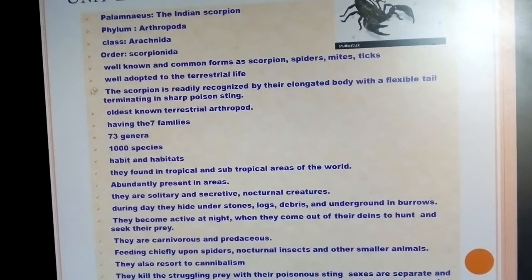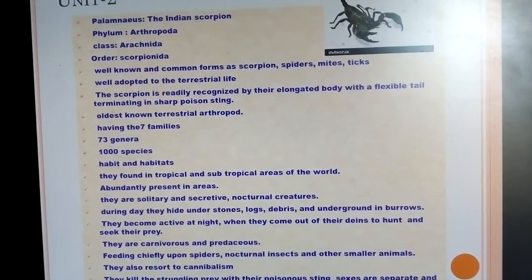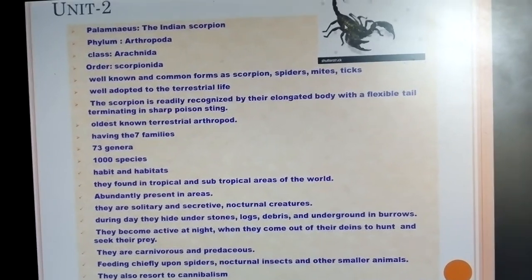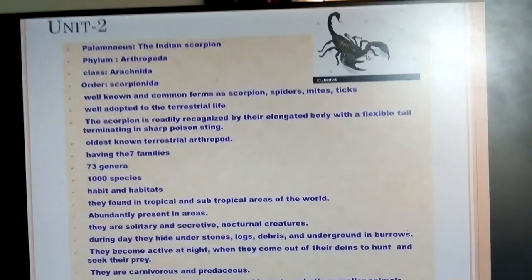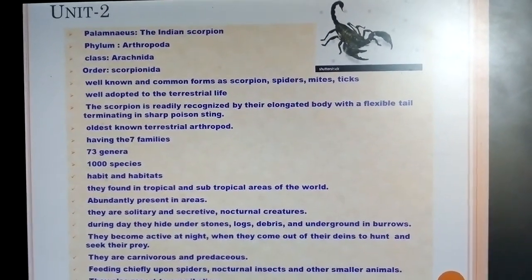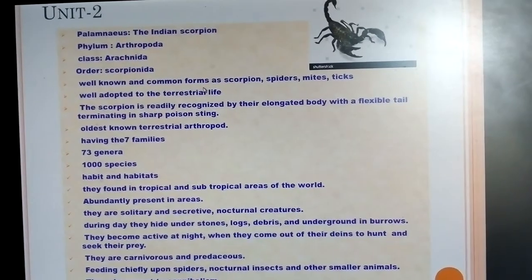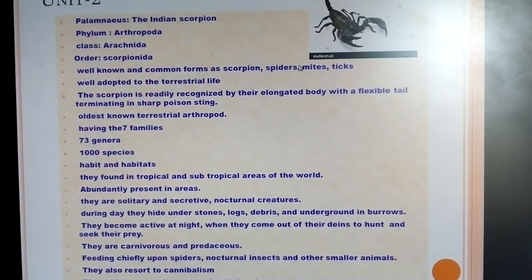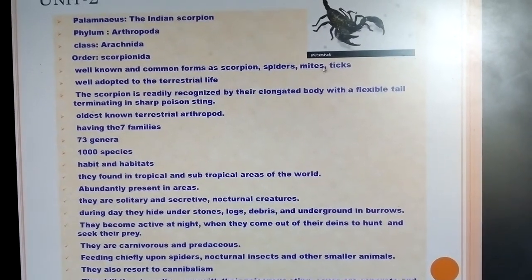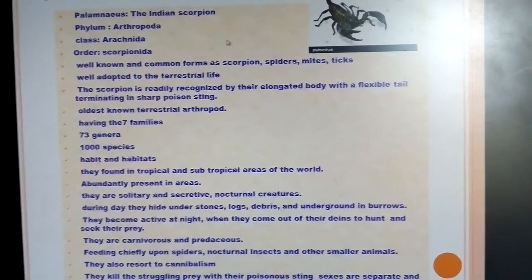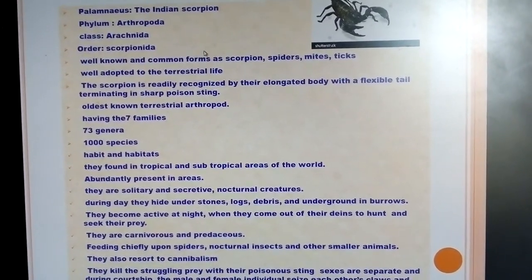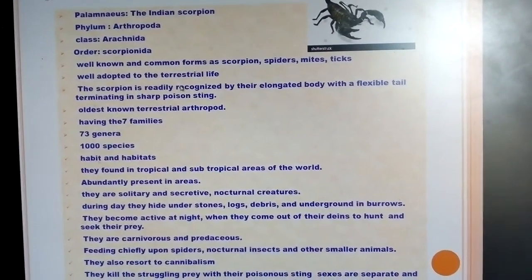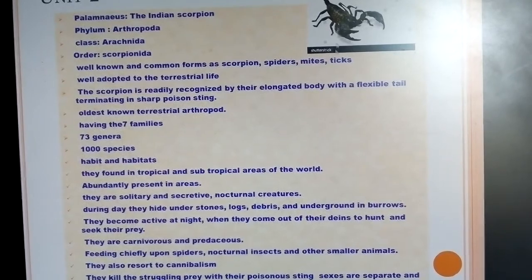Arthropoda is characterized by segmented body and jointed appendages. The scorpion has a long broad structure. The phylum Arthropoda includes scorpions, spiders, mites, ticks, and cockroaches — all well adapted to terrestrial life.